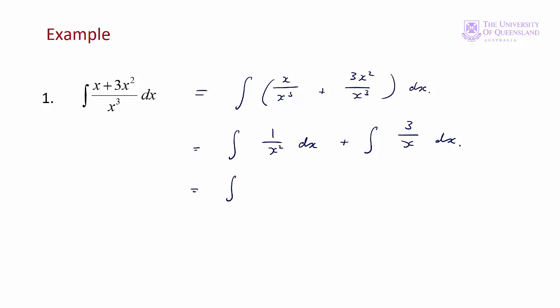Let's simplify further. It's the integral of x^(-2) dx plus 3 times the integral of x^(-1) dx, taking the constant outside. Now we're ready to apply what we might call the inverse power rule.